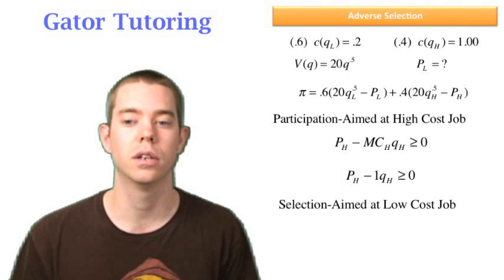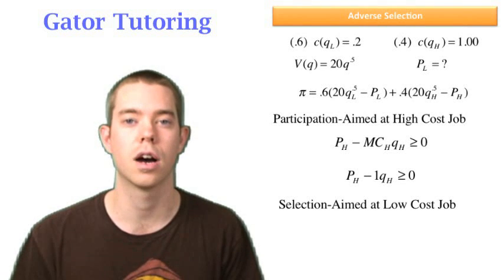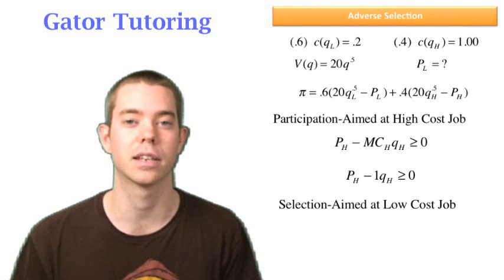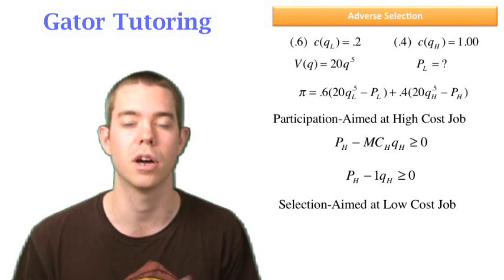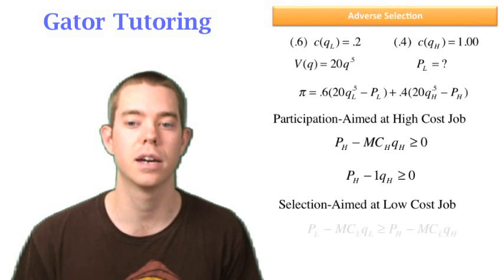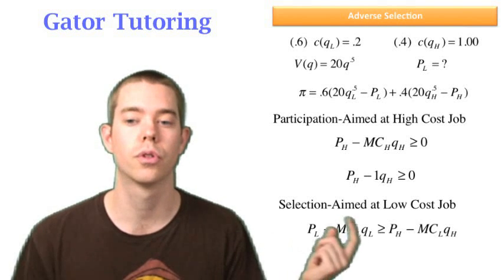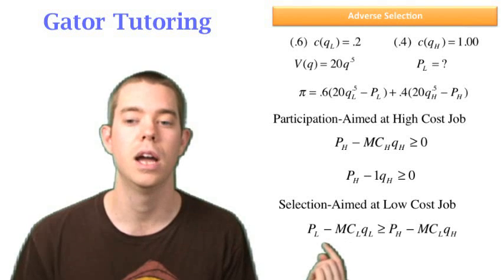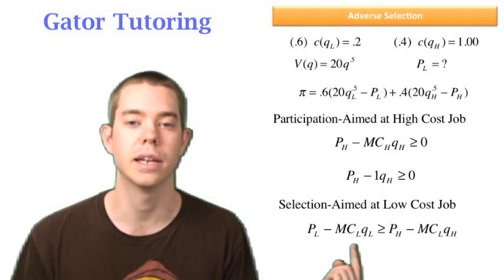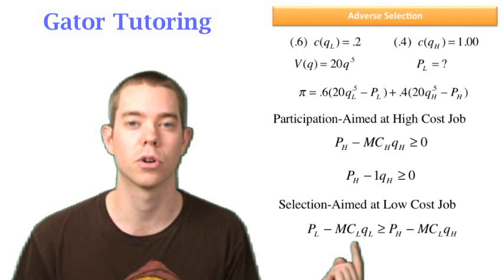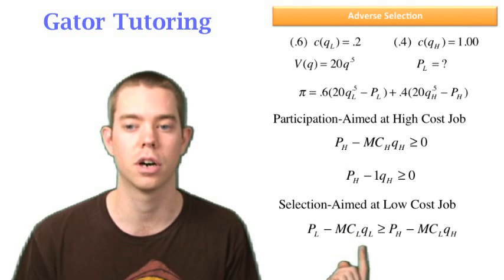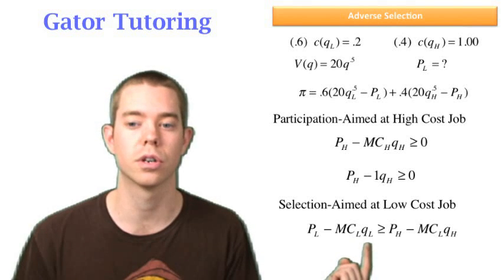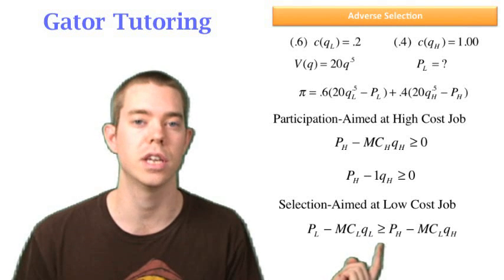So the selection constraint, well this is aimed at the low cost job. We like to call this the truth telling constraint, because it is like it sounds. This constraint is going to incentivize Joel to tell the truth, to be honest. So on the left side, we're going to have the truth, which is he told us it's a low cost job. And we paid him PL, it actually did cost him the marginal cost of a low cost job. And we ordered the quantity that we would order if he told us it's a low cost job.